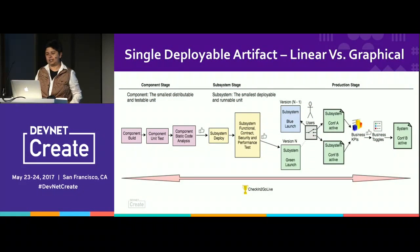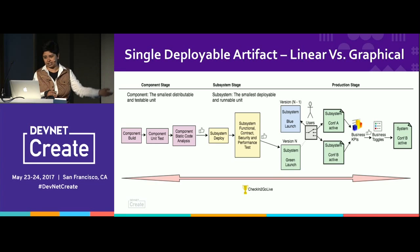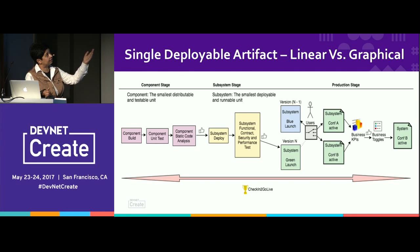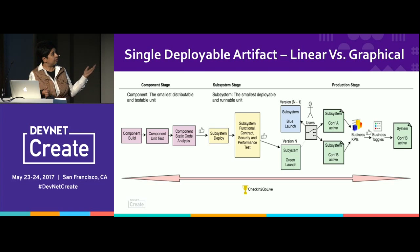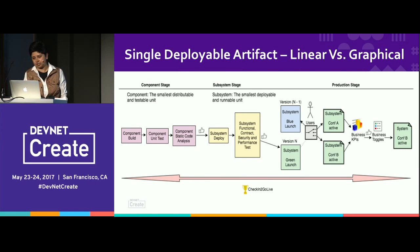A single deployable artifact follows a very linear pattern when doing check-in to go live. It's a component, build, unit test, static analysis, validation — you can call it a certified component. A subsystem is the smallest deployable and runnable unit, whereas the component is the smallest distributable and testable unit. When the subsystem is deployed, functional, contract, security, and performance tests are done, then it goes through blue-green deployment and A/B testing and out to production.